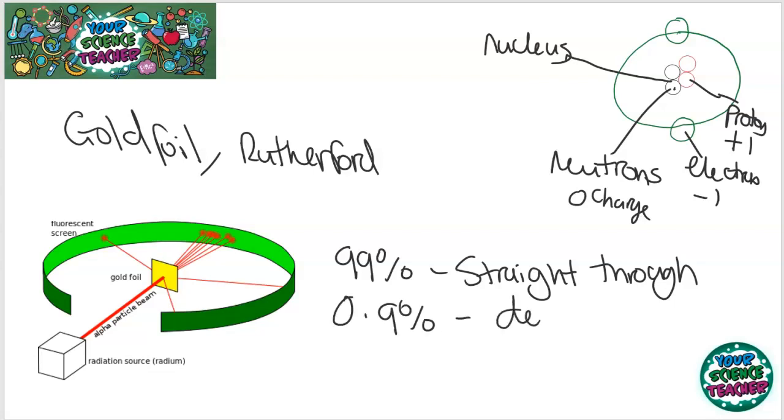The reason why they deflected was because of the fact there must be a positive nucleus and that's due to the protons in that nucleus. But there must be a positive nucleus.